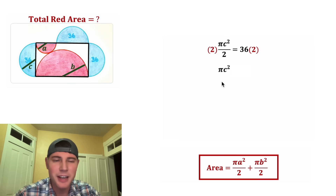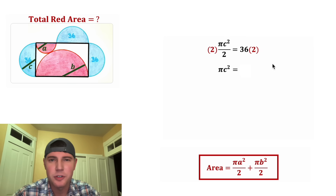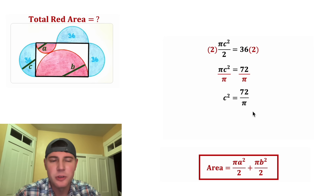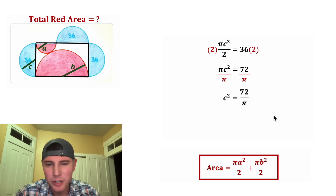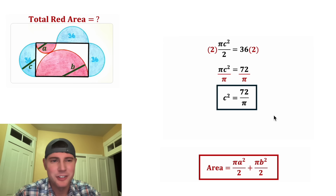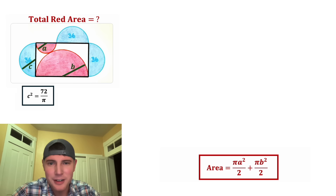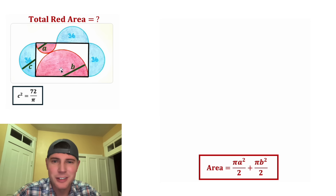Now let's solve for c². Let's get rid of the denominator — we'll multiply both sides by 2. On the left-hand side we're left with πc², and on the right-hand side 36 × 2 = 72. Next we can divide both sides by π, and that gives us c² = 72/π. This looks important, let's put a box around it and move it up here.